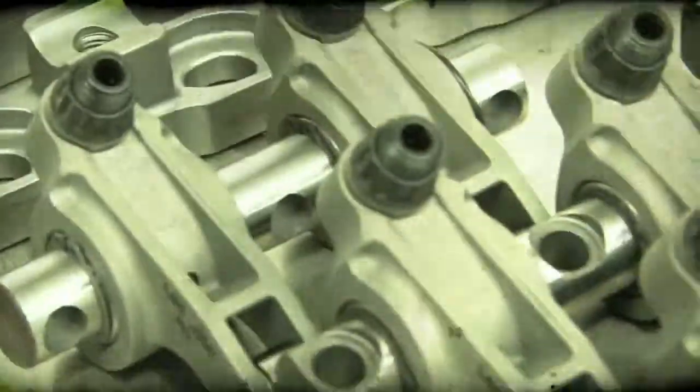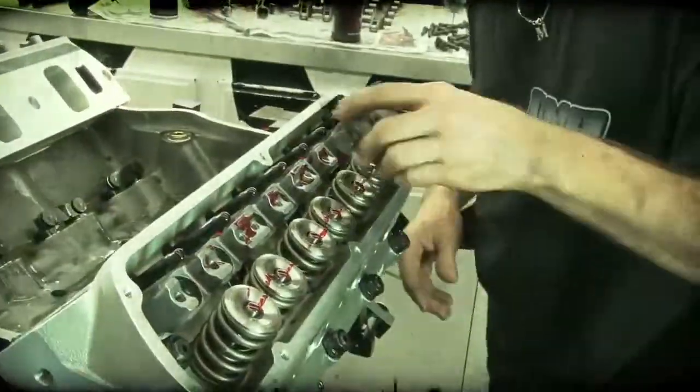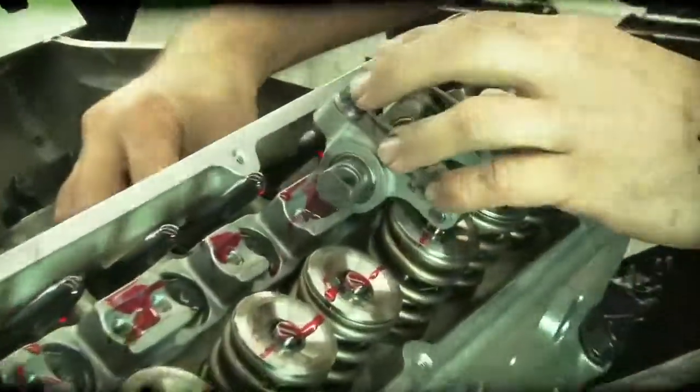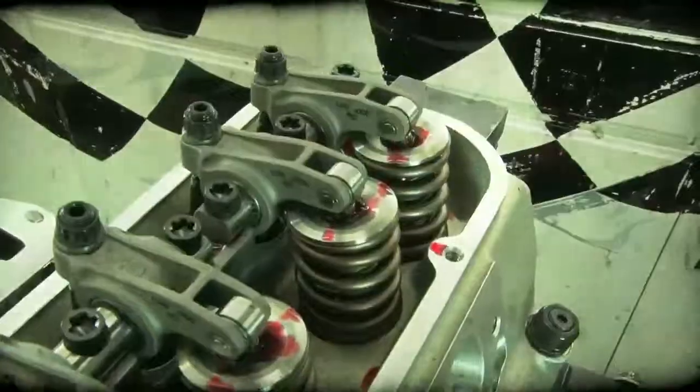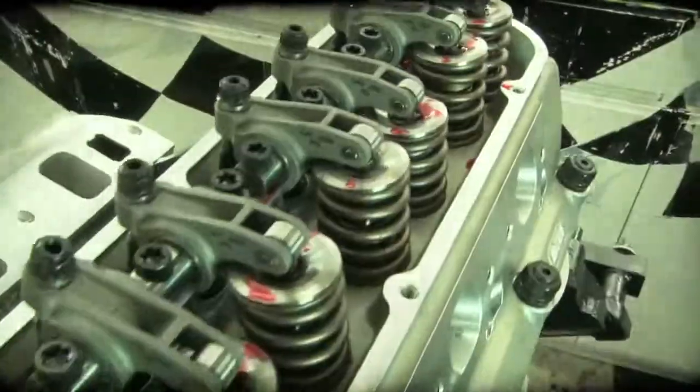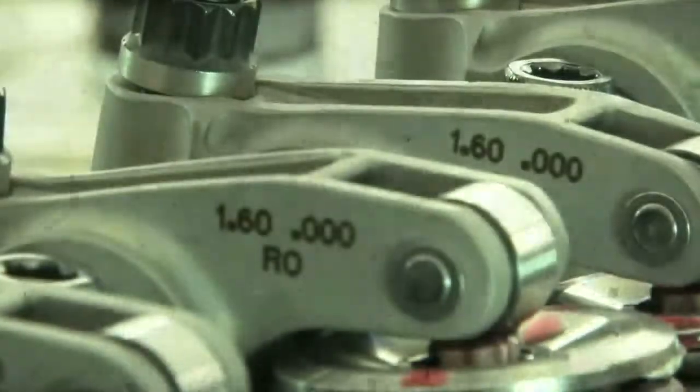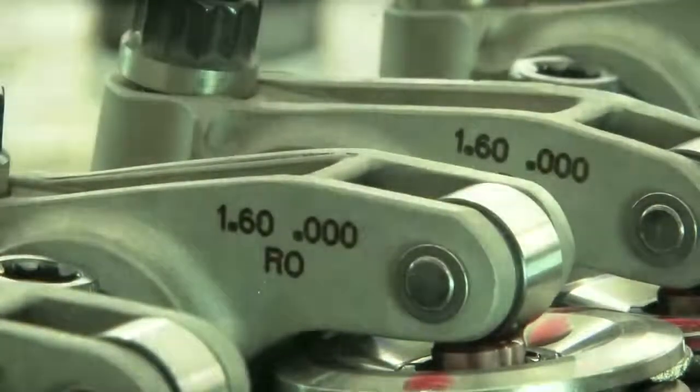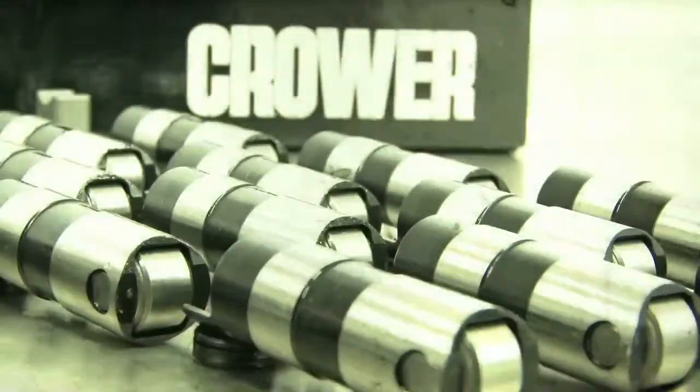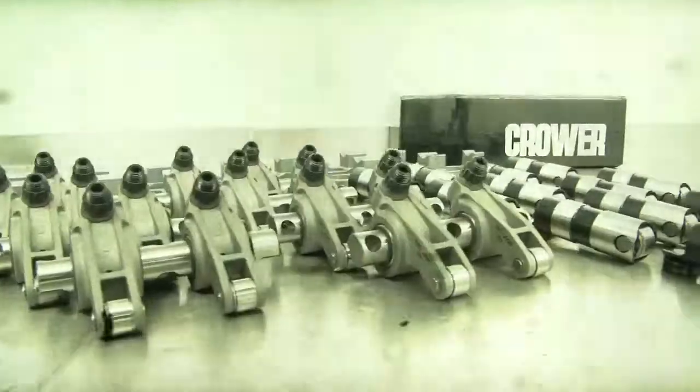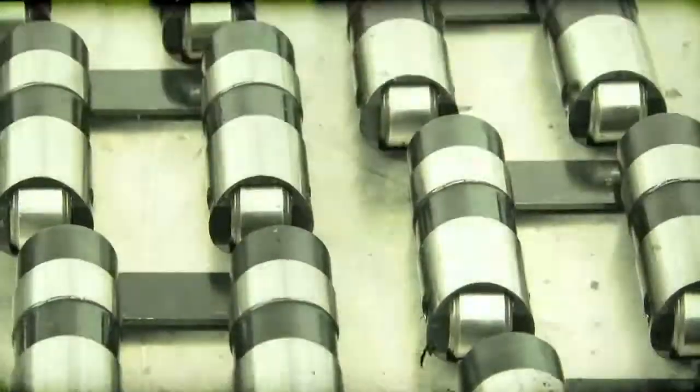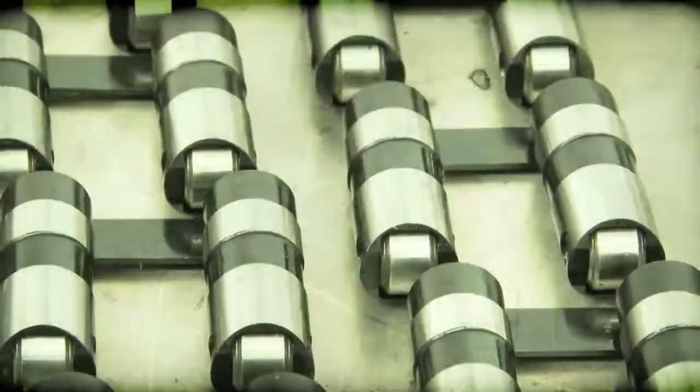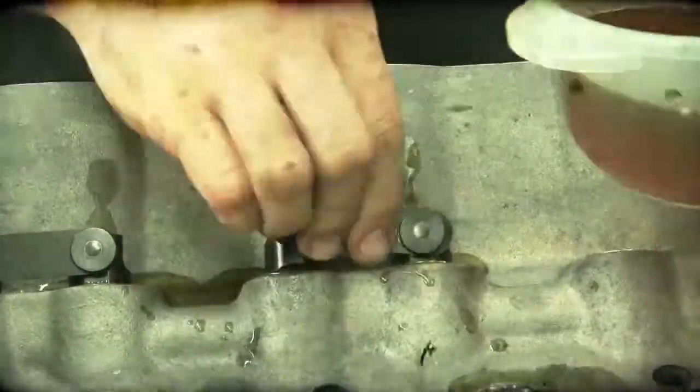Backing the Dart heads are a set of Crower's extreme duty 1.6 ratio stainless steel shaft mount rockers. The shaft mount rockers heavily resist flex under load while keeping the rotating weight low onto the valve. The needle bearing tip option further reduces resistance and valve guide wear. Since our 427 is designed to see a lot of street driving, we again turn to Crower for their hydraulic roller tie bar lifters. These lifters feature a redesigned body and bearing for superb longevity.